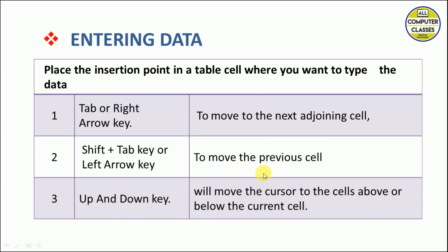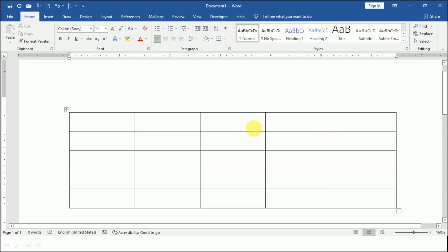The mouse is always available - you can use it to move to any cell. However, it is easier when you are typing to use keyboard keys to move to the next, previous, above, or below cell. Let's see how we can do it practically. Here is a table in front of us.